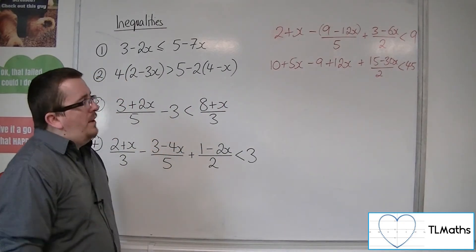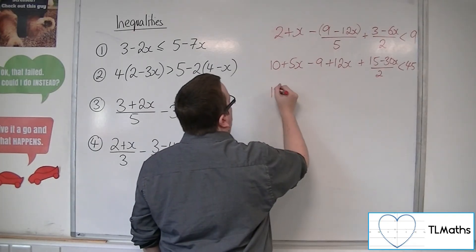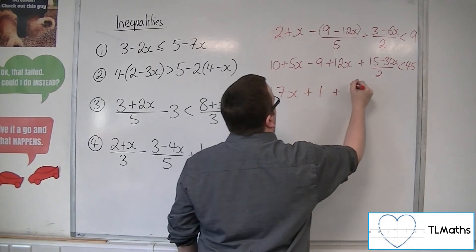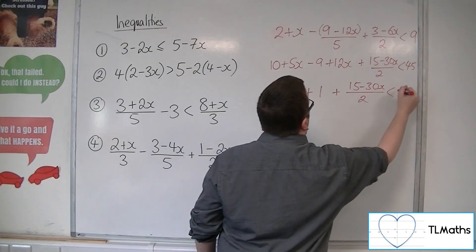So I best tidy up before I go any further. I've got 5x and 12x makes 17x. 10 take away 9 is 1. I've got 15 minus 30x over 2, and that's going to be less than 45.